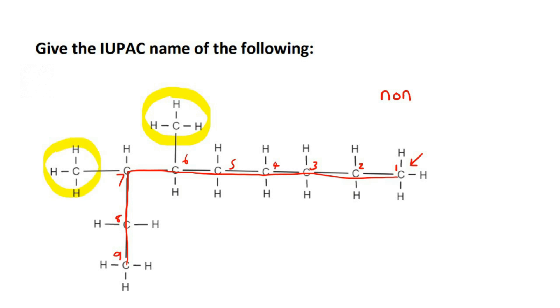Now, if we rather had to name it from the left-hand side instead, or the left part, then this would be carbon one, carbon two, three, four, five, six, seven, eight, nine. So now your branches are on carbon three and carbon four. So because of that, the lower numbers, we are rather going to choose that.